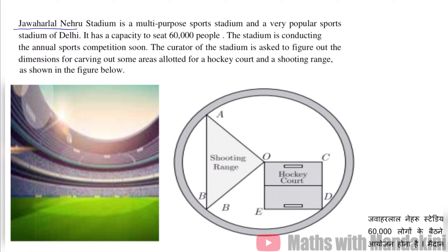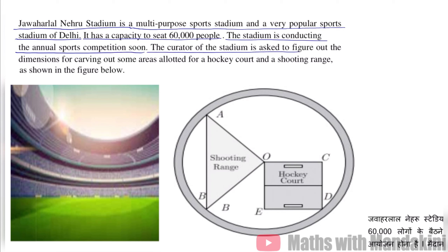Jawaharlal Nehru Stadium is a multi-purpose sports stadium and a very popular sports stadium of Delhi. It has a capacity to seat 60,000 people. The stadium is conducting the annual sports competition soon. The curator of the stadium is asked to figure out the dimensions for carving out some areas allotted for a hockey court and a shooting range as shown in the figure below.